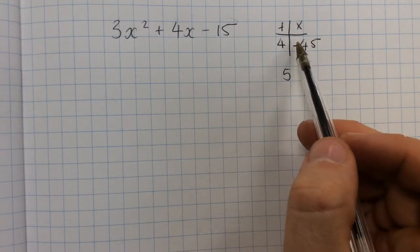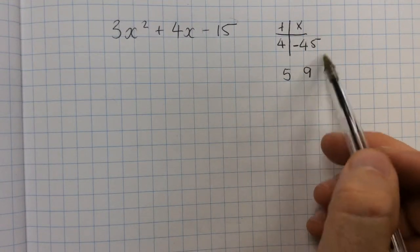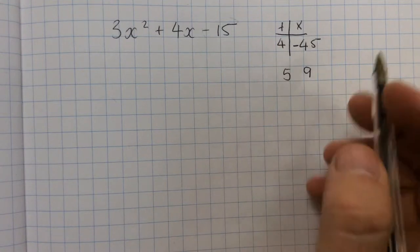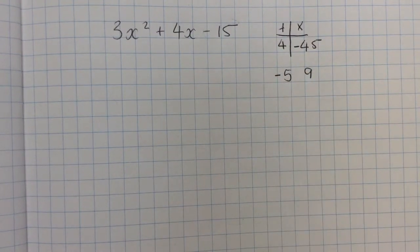Again, one of these has to be negative because we're trying to make minus 45. And if I end up on plus 4, I'm going to start on minus 5 and add on 9.